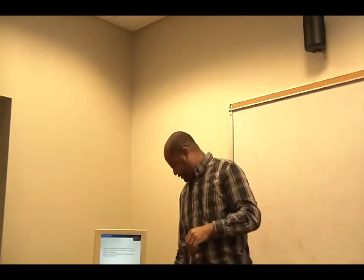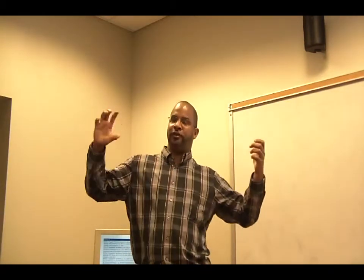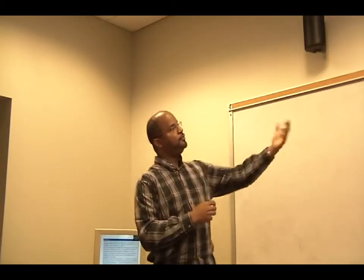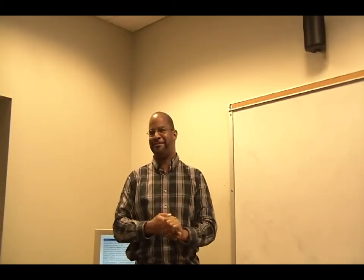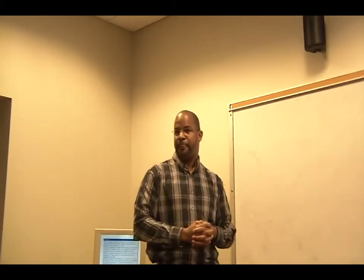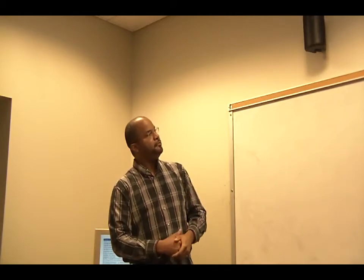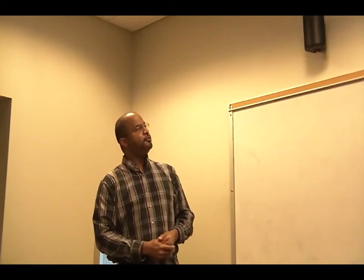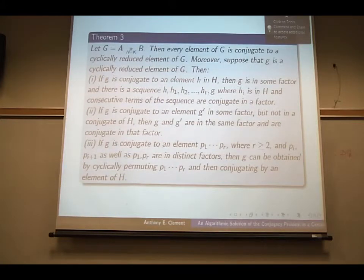So this is the theorem. We're going to use this as a blueprint. So now exactly, we know exactly how elements sit in G, and we're going to use this given two elements, whether or not they are conjugated. And so this is a very important theorem. I don't see people using this. I've never seen, but it kind of gives you a blueprint to solve the conjugacy problem in general. Okay, so it says this, that let G be, in terms of let G be a free product, then every element in G is conjugate to a cyclically reduced element in G. Moreover, suppose G is a cyclically reduced element, then we have three cases. If G is conjugate to an element H in H, then G is in some factor, and there's a sequence, H1, H2, to HT, and G, where HI is in H, and consecutive terms of the sequence are conjugate in a factor.